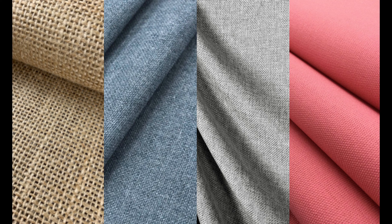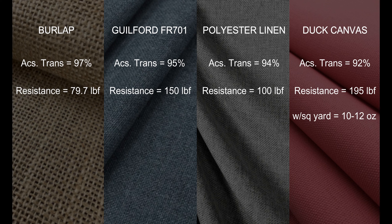Here are a few recommended fabrics with their acoustical transparency ratings — these are industry standards that have been tested and trusted for years, and you'll find them in most professional studios, home theaters, and listening rooms. Burlap has the highest acoustical transparency with an average rating of 97%, meaning it allows 97% of sound through while absorbing the remaining 3%. This is due to burlap's loose weave, which allows for wider airflow and sound movement. Next up is Guilford of Maine FR-701 with a 95% rating, polyester linen at 94%, and cotton duck canvas at 92%.